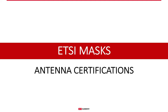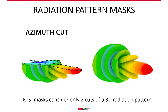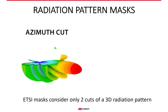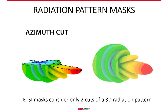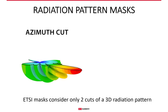You may also know about the ETSI masks, which to a degree also serve as a parameter showing how well antennas perform in terms of noise. It is important to clarify that ETSI masks consider two main cuts of an antenna's radiation pattern — the azimuth and elevation. They consider two slices of the 3D radiation pattern, which is rather incomplete from the point of view of the whole 3D radiation pattern and all the side lobes that matter in WISP networks.